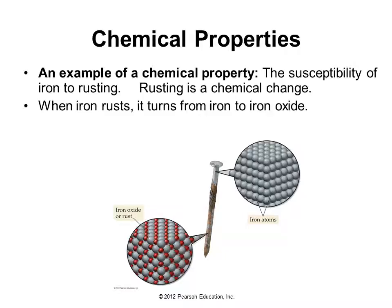A chemical property is illustrated here. Here we have an iron nail composed of iron atoms, and it reacts with oxygen to form iron oxide, or rust. So when iron rusts, it turns to iron oxide — we have a chemical change.